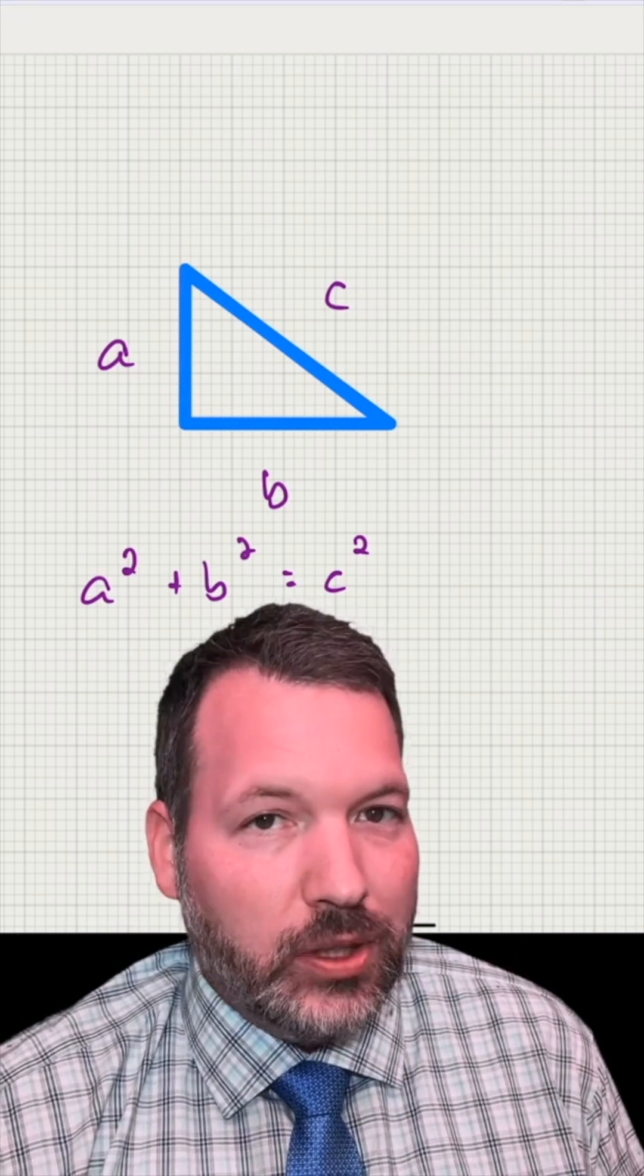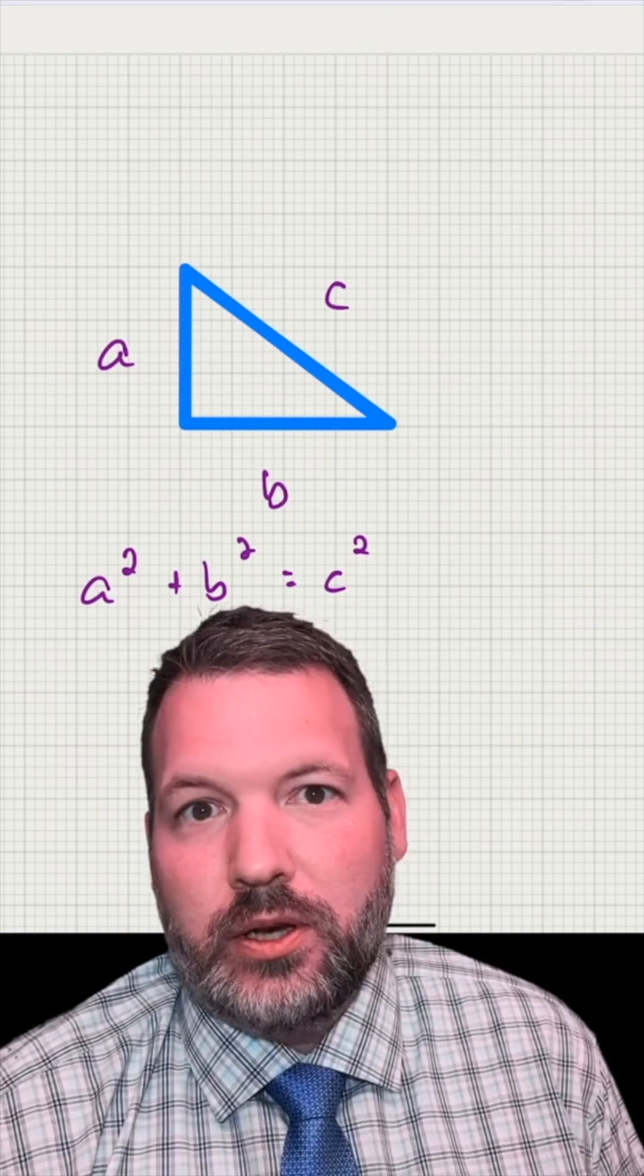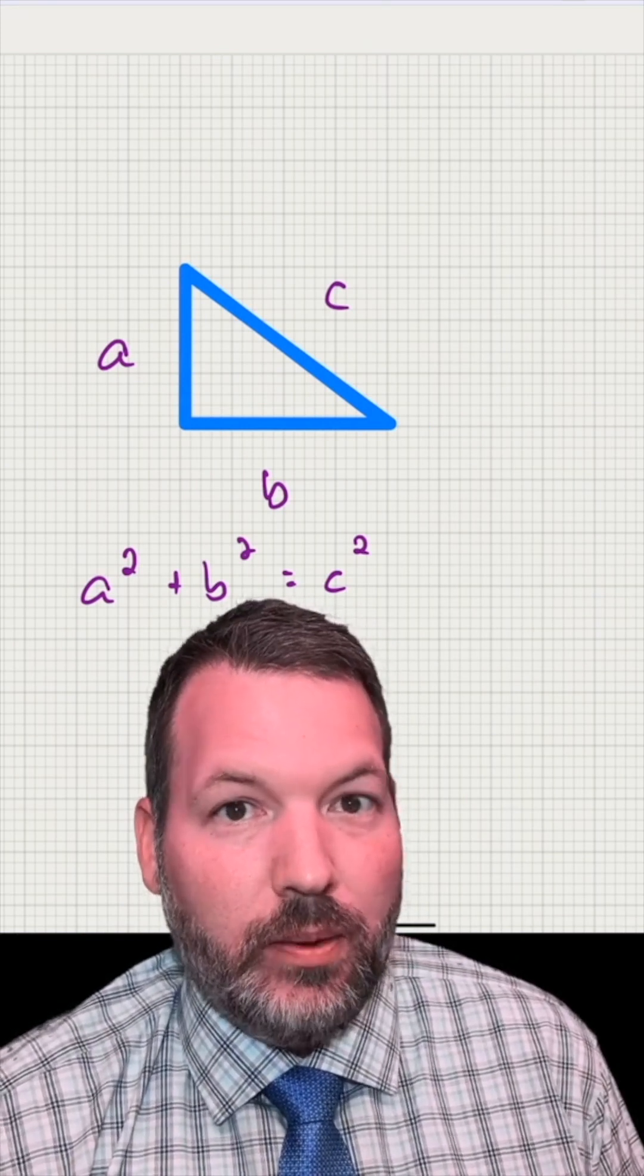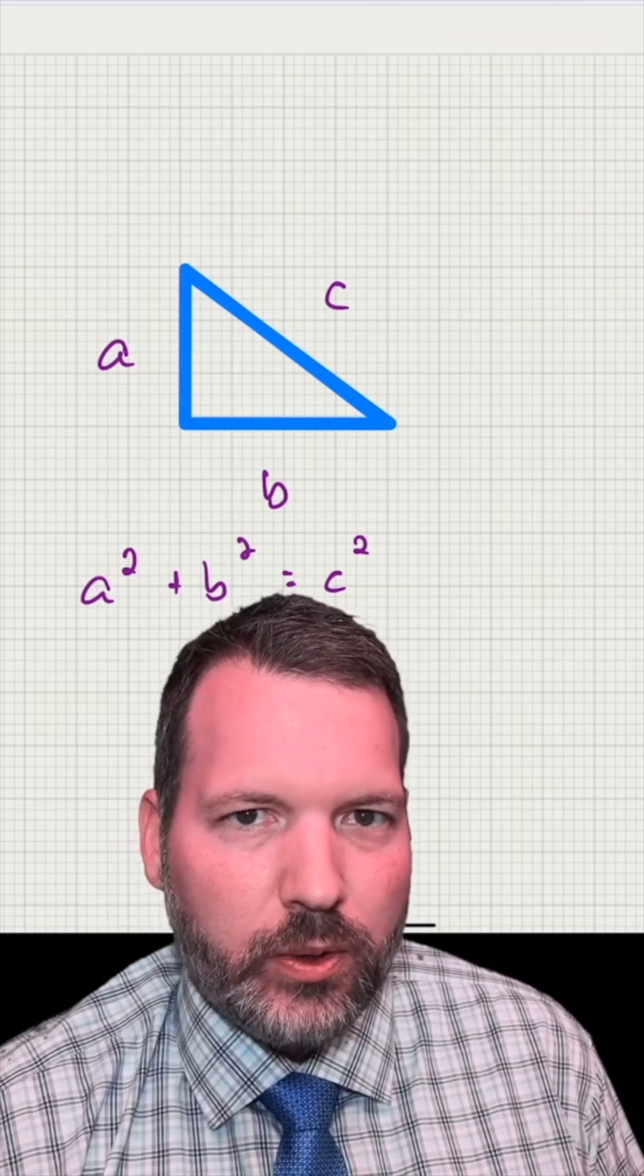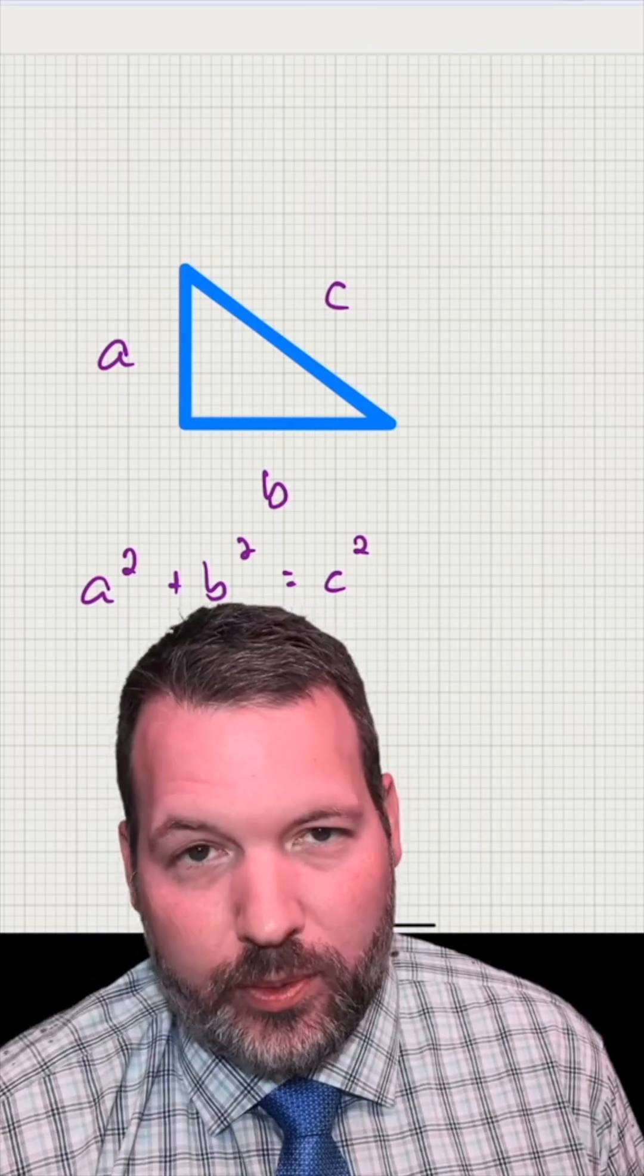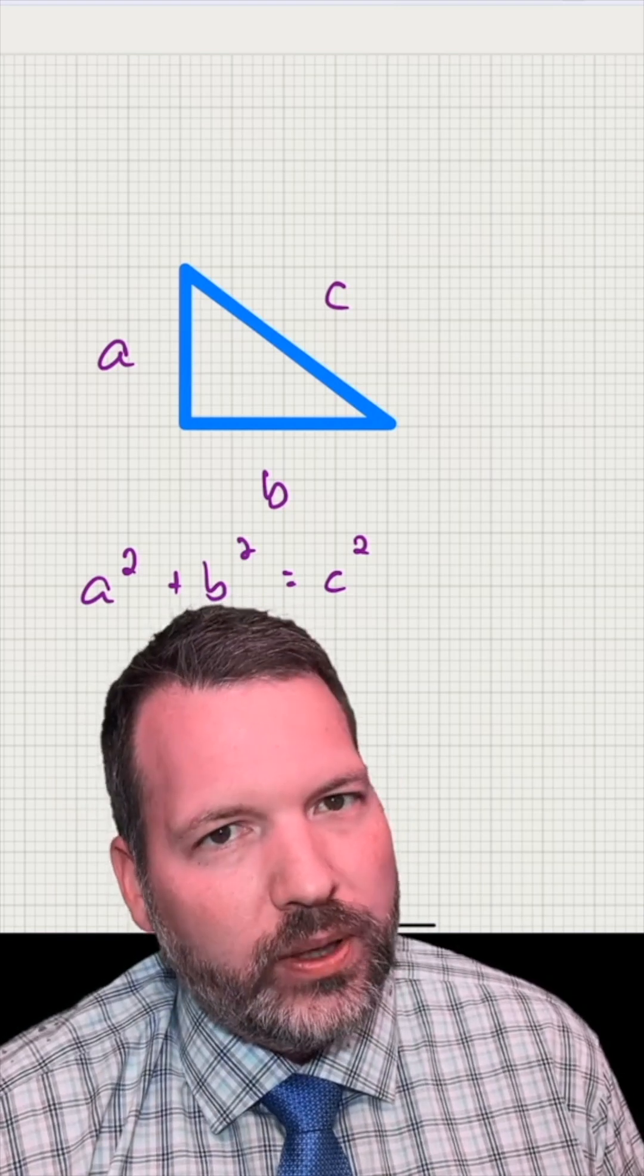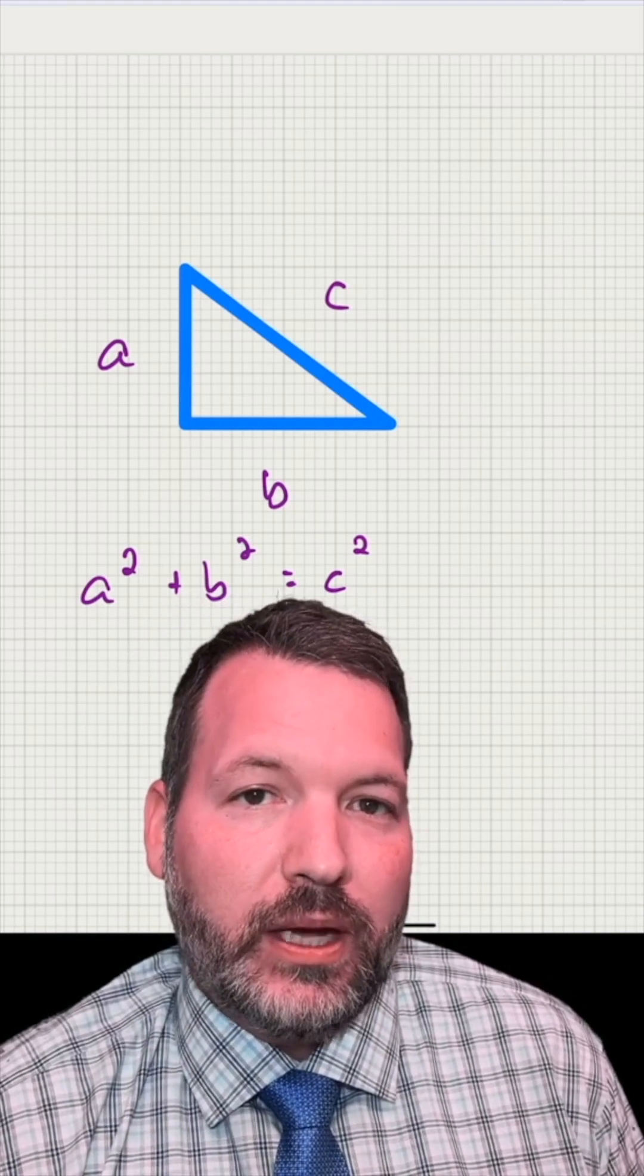But if you had talked to ancient mathematicians 3,000 years ago, 6,000 years ago, and said to them, do you know about a squared plus b squared equals c squared, they would have no idea what you're talking about, because probably they don't speak English. But even more importantly, they don't speak the language of symbolic algebra.